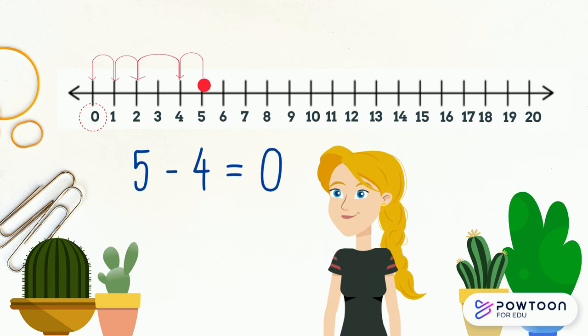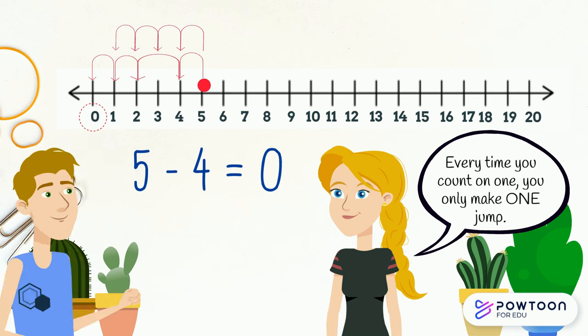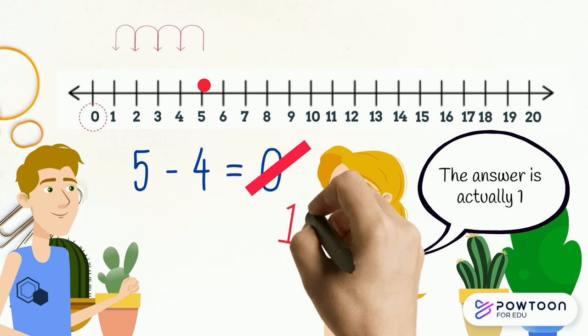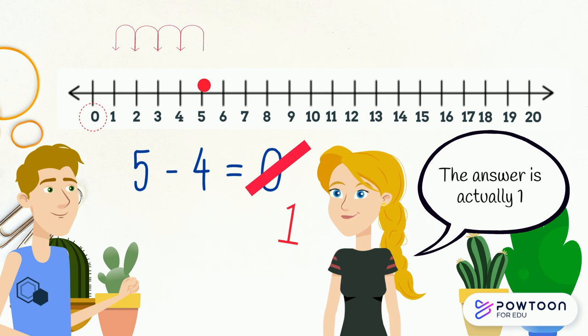You need to make sure that you make one jump for every count. So five take away four really equals one. Well done.